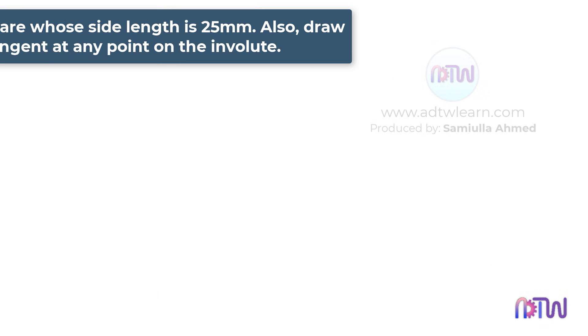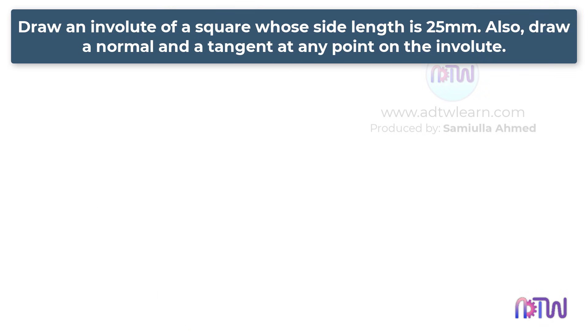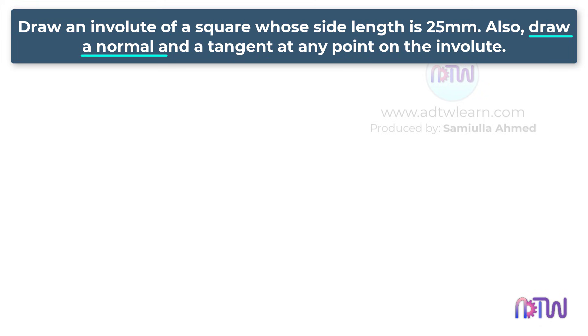Here are the instructions. Draw an involute of a square whose side length is 25 mm. Also, draw a normal and a tangent at any point on the involute.